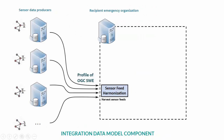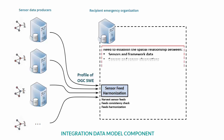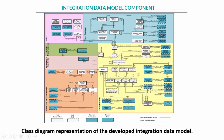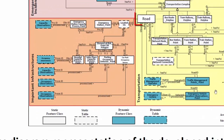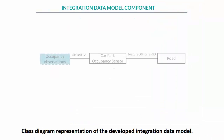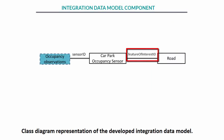Once standard-based sharing of sensor data is enabled between stakeholders and sensor feeds are harmonized upon their arrival at the recipient emergency organization, the final step is to integrate these sensor feeds, coming from multiple sources, into a unified database model. To address this requirement, a database model called the integration data model component is developed in this research. It collates data into a unified data store and establishes the relationship between framework data, which is static and already exists in the database, the sensors whose information arrives as SensorML files, and sensor observations which are highly dynamic and arrive as a series of Observation and Measurement files. The relationship between features is established using feature of interest as a common attribute between sensors and framework data, and sensor ID as a common attribute between sensors and their observations.